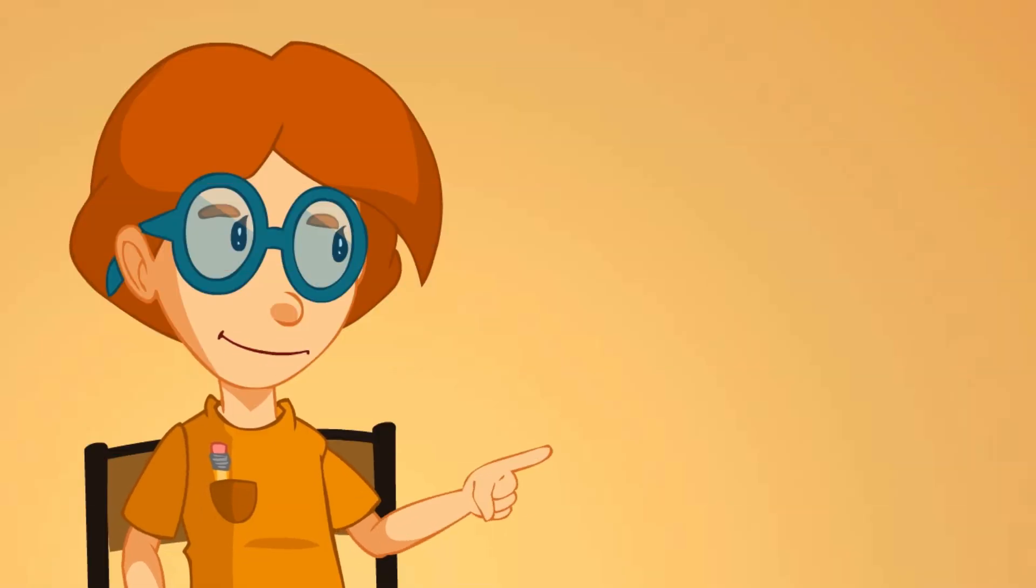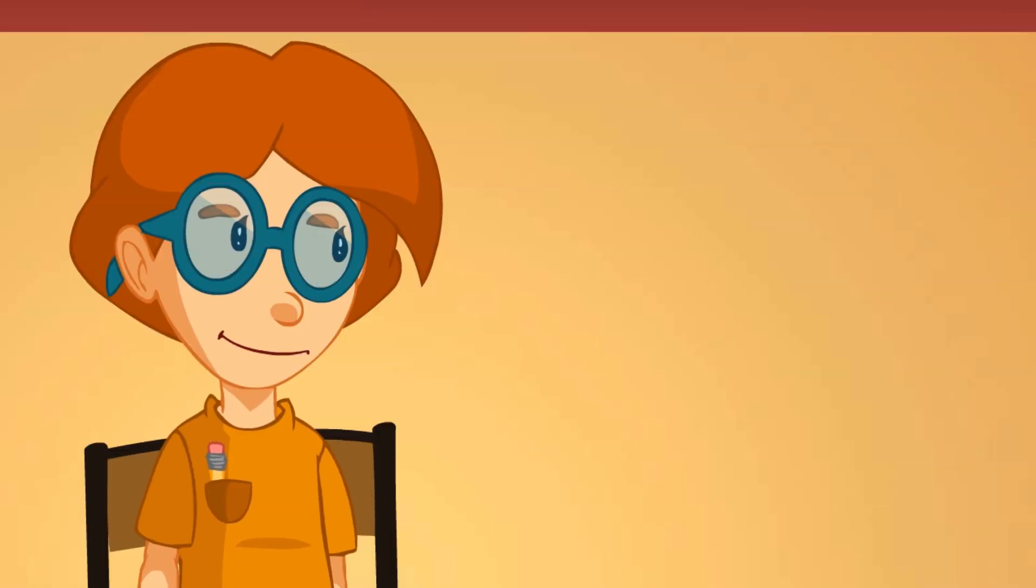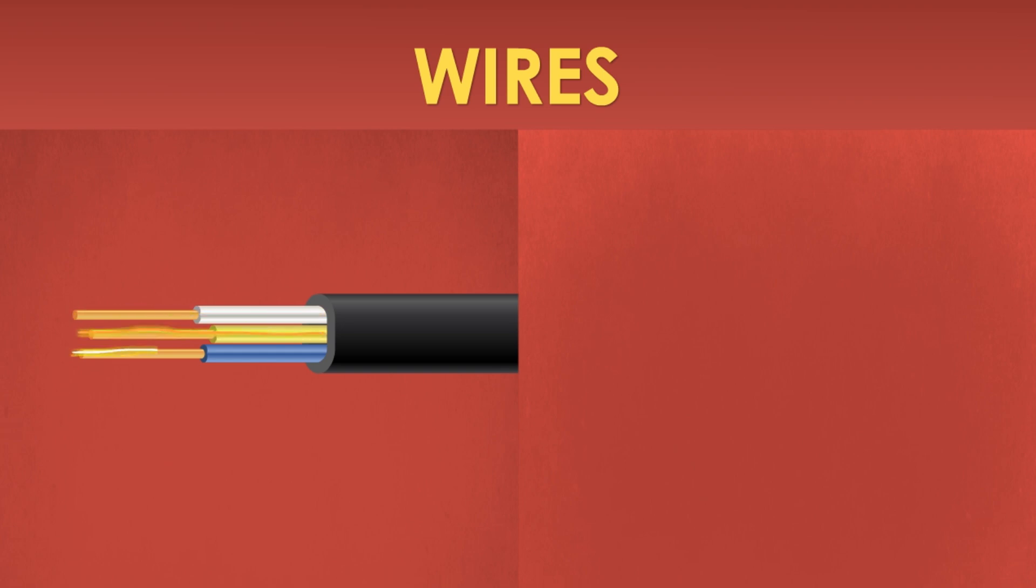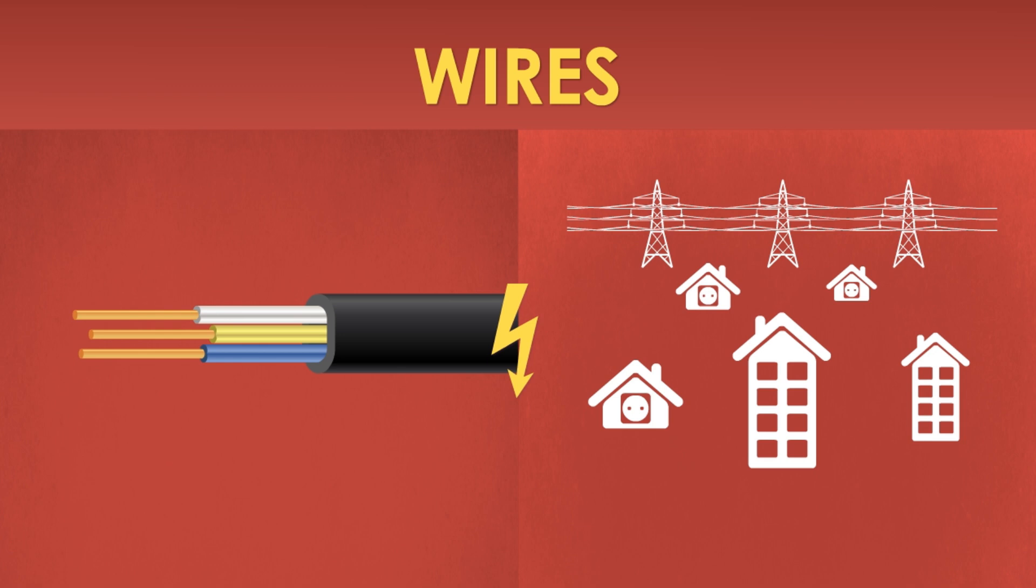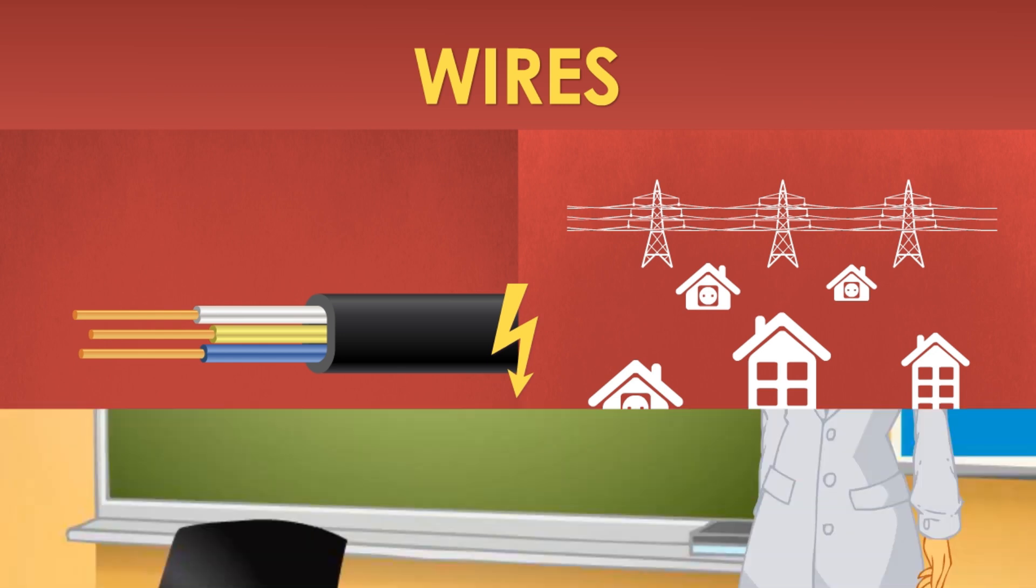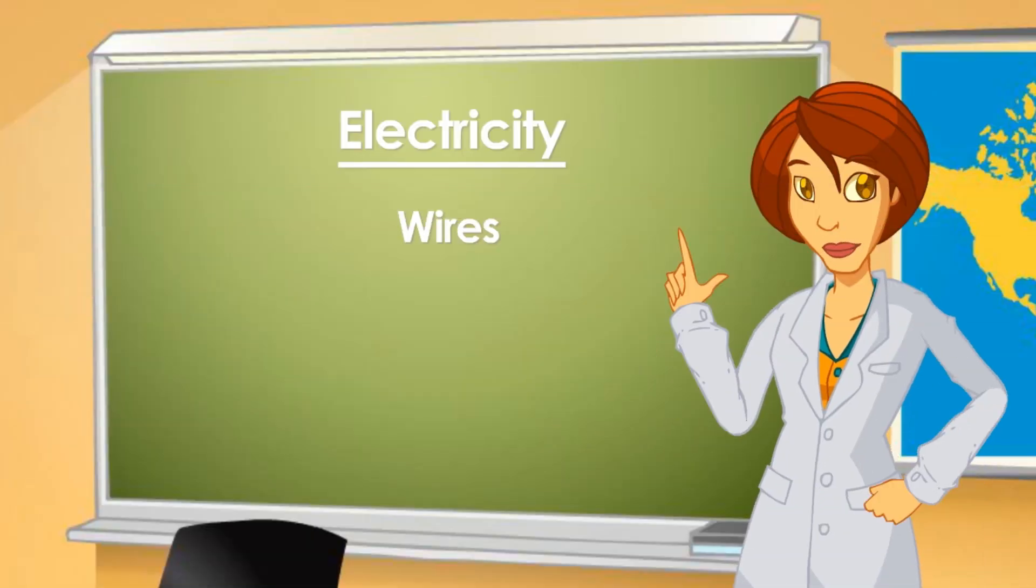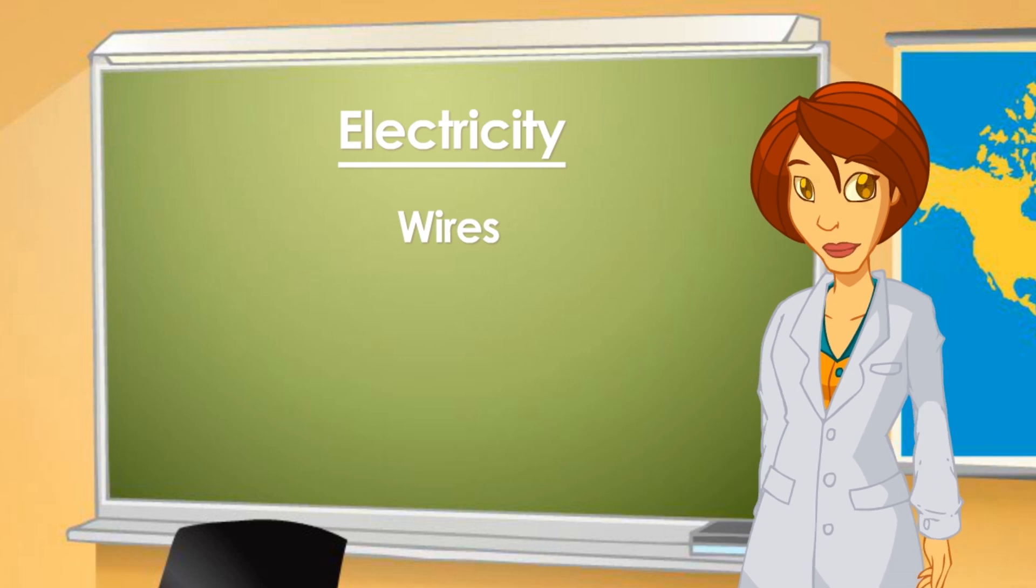Are the wires in the street similar to those we have at home? The wires in the street are prepared for a lot of electric current to flow through them. Think that those wires supply whole neighborhoods with electricity. But both wires in the street and those in our homes contain a good conductor material inside, through which electricity flows.